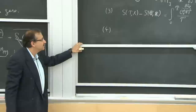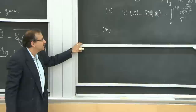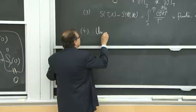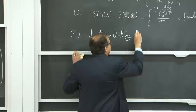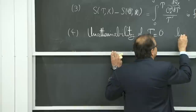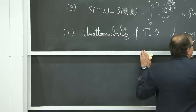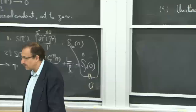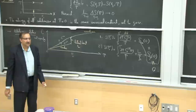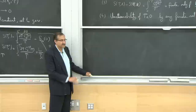Another consequence, which you can find in the notes, is the unattainability of T equals zero by any finite set of operations. If you want to get to zero temperature, you have to cool step by step, and the steps become smaller and smaller — you would have to repeat that infinitely many times.